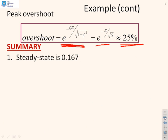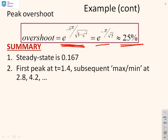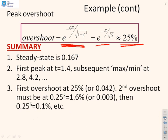So let's summarize what we've got so far. The steady state is 0.167. The first peak is at 1.4, and subsequent maximum and minima will be at 2.8, 4.2, and so on. The first overshoot is 25%, so the second overshoot is going to be a quarter of a quarter, that's much smaller. I don't think it should be, sorry, the next overshoot is 0.25 cubed, let's be precise, which is 1.6%, which is very small, and so on.